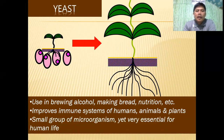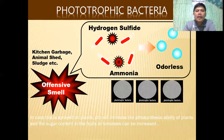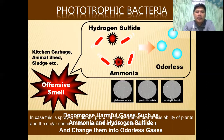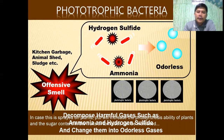Yeast is a small group of microorganisms, yet very essential for human life. If we want our plants to be resistant to diseases and pests, yeast is one of those microorganisms we need to apply. Phototrophic bacteria, on the other hand, are in charge of neutralizing offensive smell. When sprayed on plants, phototrophic bacteria increase the photosynthesis ability of plants and the sugar content. If we use EM in our pig pens and chicken coops, we can totally neutralize bad, offensive smells.